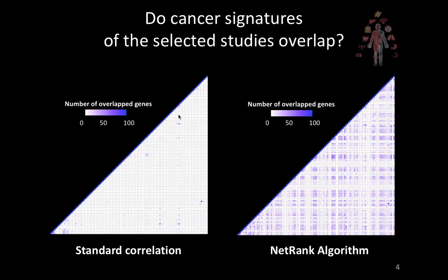This is the same picture if we take a standard correlation on different kinds of cancers and compare it with our Net Rank algorithm. For more information, please see the poster and the soon-to-be-published article, and you can approach us for a nice discussion and more insights. Thank you.